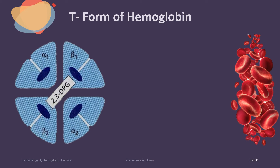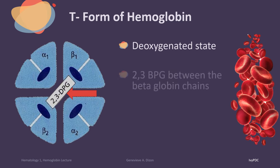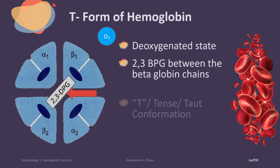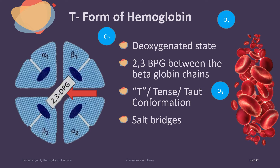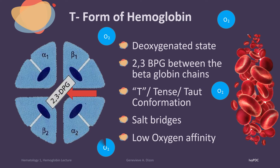The concentration of 2,3-BPG also has an effect on oxygen affinity. In the deoxygenated state, the hemoglobin is stabilized by the binding of 2,3-BPG in between the beta globin chains. This is now known as the T-conformation, the tense conformation, or the taut conformation. The formation of salt bridges between the phosphates of 2,3-BPG further stabilizes the tetramer in the T-conformation. When hemoglobin is in the T-form, it constrains the movement of the polypeptide chains, therefore having a decreased affinity to oxygen.